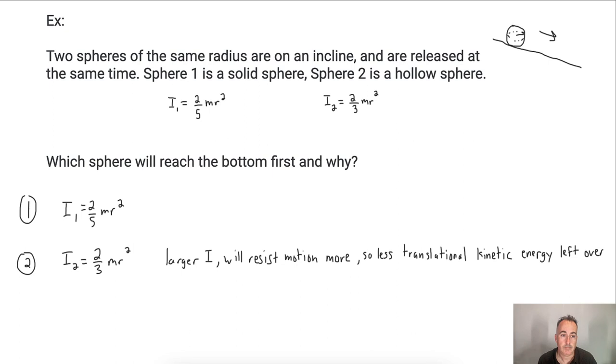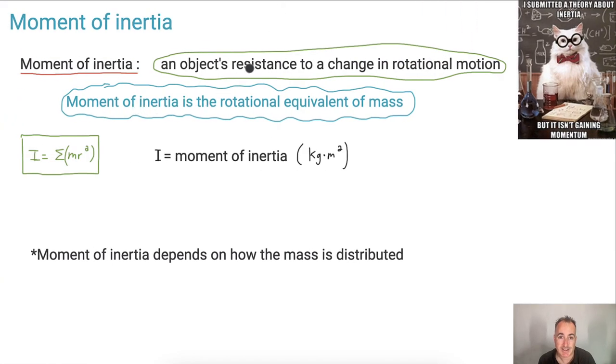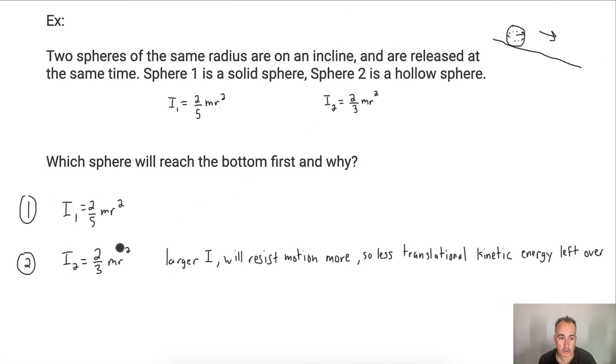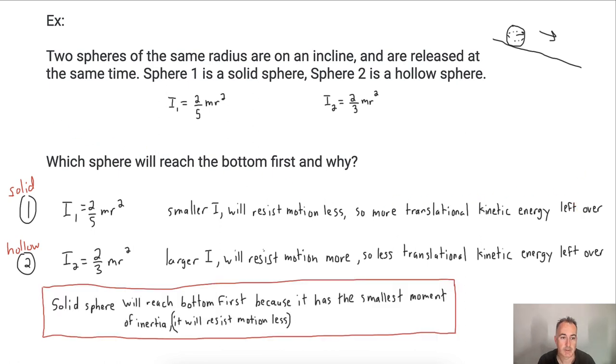So here I could say that this i2, because it's a larger number, because this moment of inertia is larger, it will resist the motion more. Because remember, moment of inertia is a resistance to change in rotational motion. So if it has a larger i value, that means it must resist the motion more. Now what does that mean? Well, that means it has less translational kinetic energy left over. Now, of course, we can write the opposite for sphere one. Because i1, which is the solid sphere, because it has a smaller i, a smaller moment of inertia, remember, it will resist the motion less. So that means it has more translational kinetic energy left over. Now what does that mean for us? So the solid sphere will reach the bottom first. And why? Again, it's because it has the smallest moment of inertia, so that means it resists the motion less.